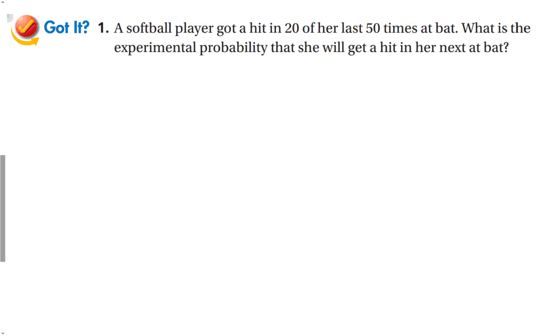A softball player got a hit in 20 of her last 50 times at bat. What is the experimental probability she will get another hit? So the probability of a hit is going to be 20 out of 50, which is 0.4, which is 40%. Again, that doesn't mean she's going to get a hit 40% all the time. It's just out of her last 50 times, she got a hit 40% of the time.